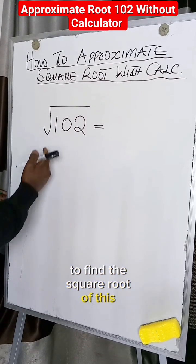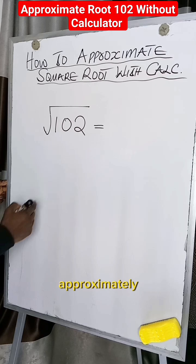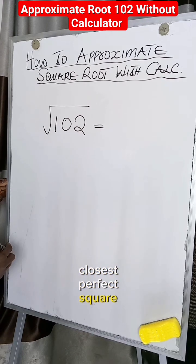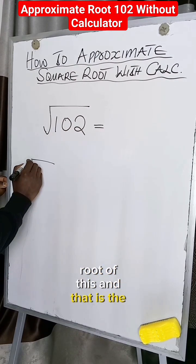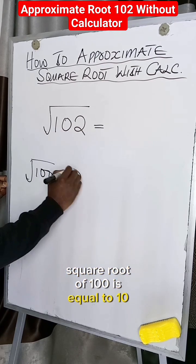To find the square root of this without our calculator, approximately, we are going to take the closest perfect square root of this, and that is the square root of 100. Square root of 100 is equal to 10.